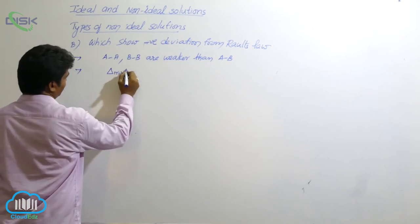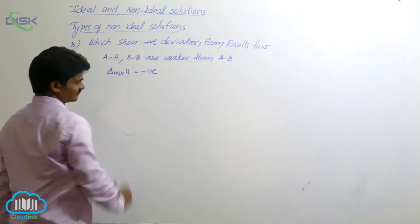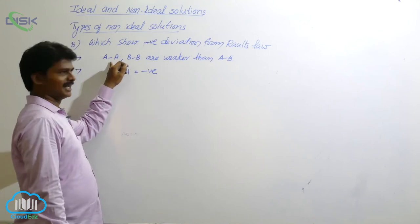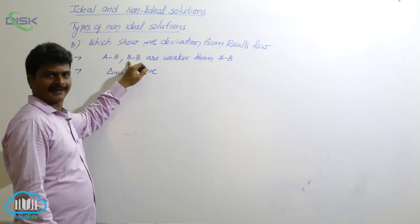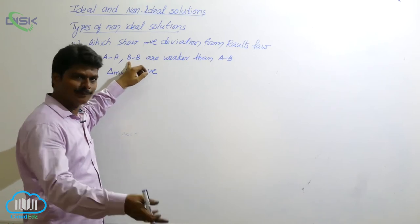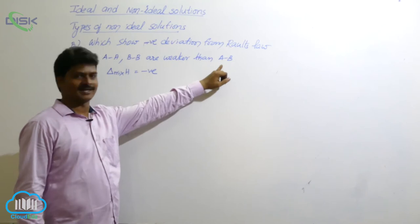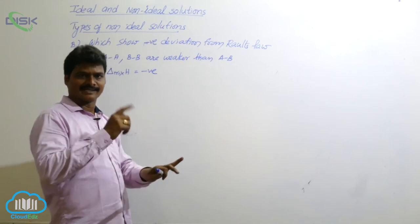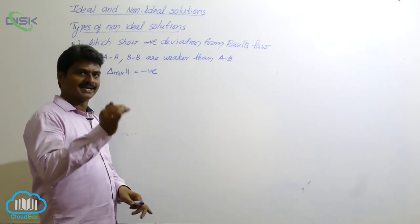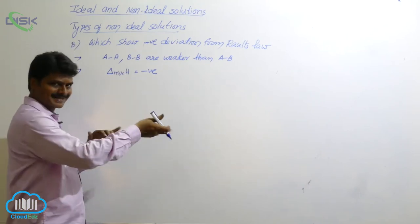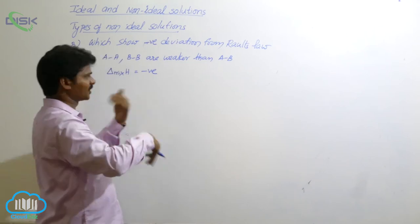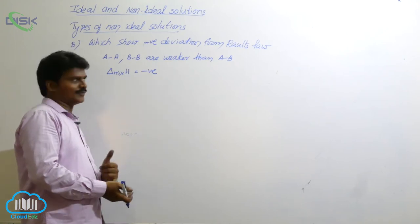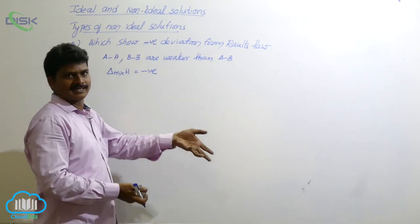In this case, enthalpy of mixing is negative. Why? To break AA bonds and BB bonds, energy is required. In order to break any bond, energy is required. For the formation of a bond, energy is released. So if you compare the energy released for AB bond formation and the energy required for AA and BB bond breaking, which will be more? The energy required for AA and BB, or the energy released in AB?